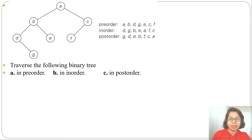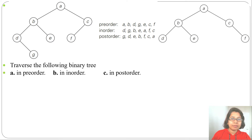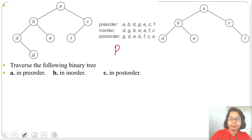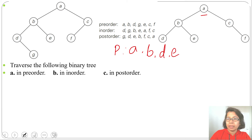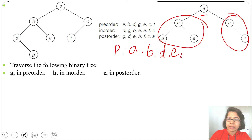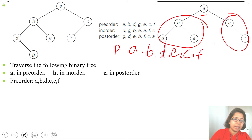Let's discuss more examples — traverse the following binary tree in pre-order, in-order, and post-order. For pre-order (root, left, right): first visit root A, then left subtree — root B, next D, next E. Now the left part is done; visit the right part: root C, C has no left child, so visit F. Pre-order result: A, B, D, E, C, F.